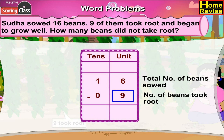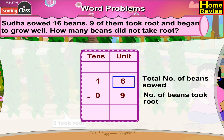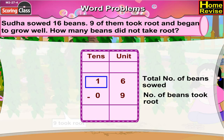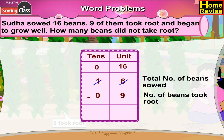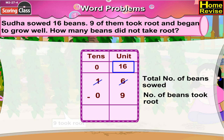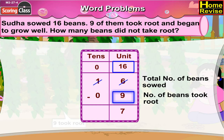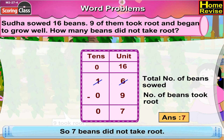9 cannot be subtracted from 6, so we will have to untie 1 ten from 1 ten, which means 1 ten 6 units becomes 16 units. Now 16 minus 9 is 7. So 7 beans did not take root.